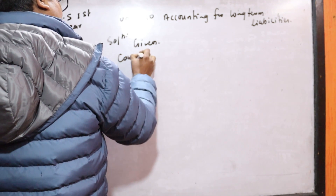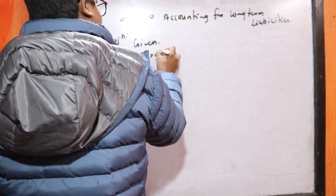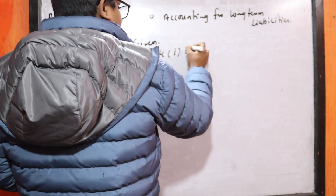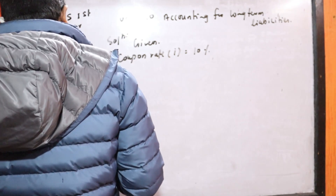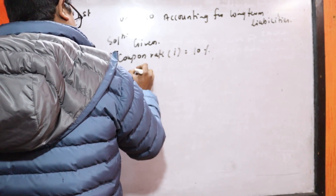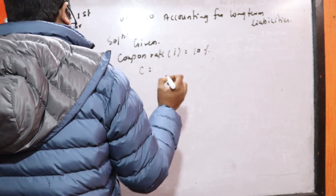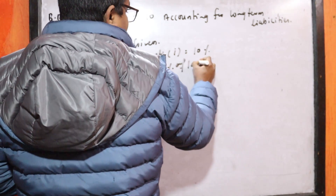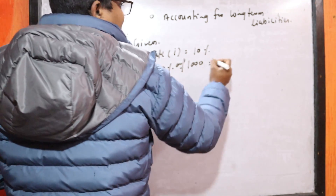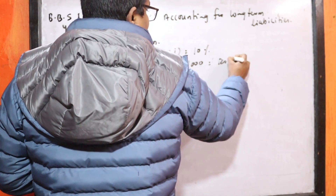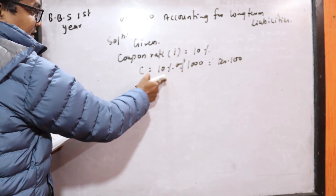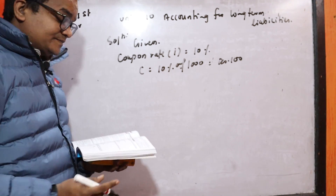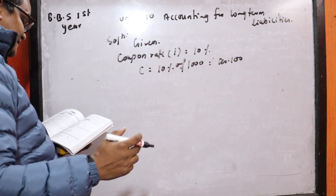This is the coupon rate. If you get a 10% coupon rate on a Rs. 1000 par value bond, you can get Rs. 100 as the annual coupon payment.